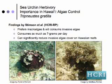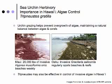These researchers working in the field found that at moderate densities — Tripneustes gratilla, about one urchin per square meter — can significantly reduce invasive algae cover on Hawaiian coral reefs. Tripneustes gratilla is an important grazer on coral reefs that helps to prevent the overgrowth of algae that can smother corals.